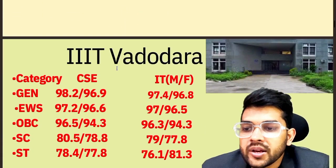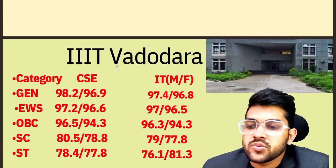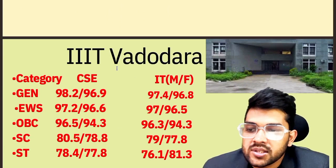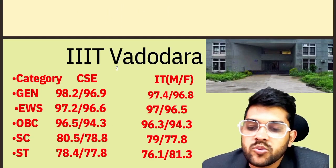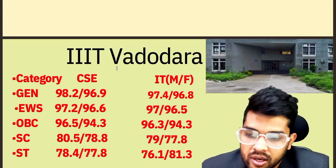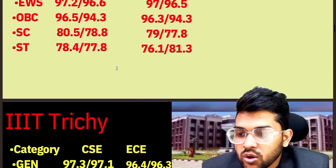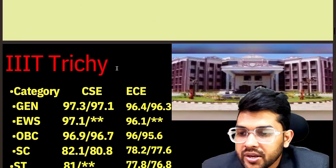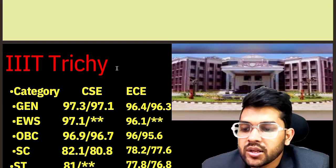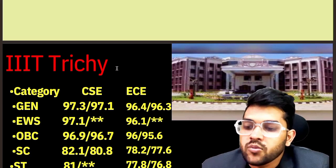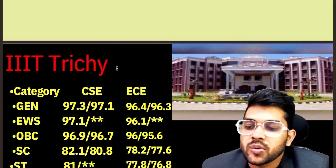For IIIT Vadodara: CSE male/female General — 98.2 / 96.9; IT — 97.4 / 96.8. Other categories you can check sign-wise. For IIIT 3G: CSE male figures are 97.3, 97.1, 97.1, 96.9, 82.1, 81 for General, EWS, OBC, SC, ST respectively. For female cutoffs, check after the slash. EC cutoffs available on screen.